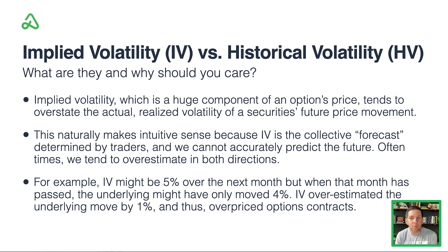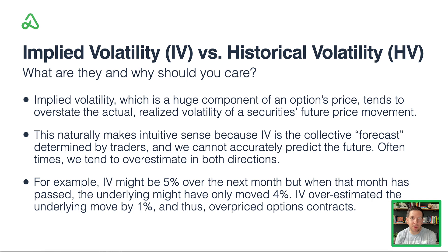What are they and why should we care? First, we have to understand what implied volatility and historical volatility are. Implied volatility is a huge component of an option's price and tends to overstate the actual realized volatility of a security's future price movement. This makes intuitive sense because implied volatility is the collective forecast determined by traders, and we can't accurately predict the future — so we tend to overestimate in both directions.